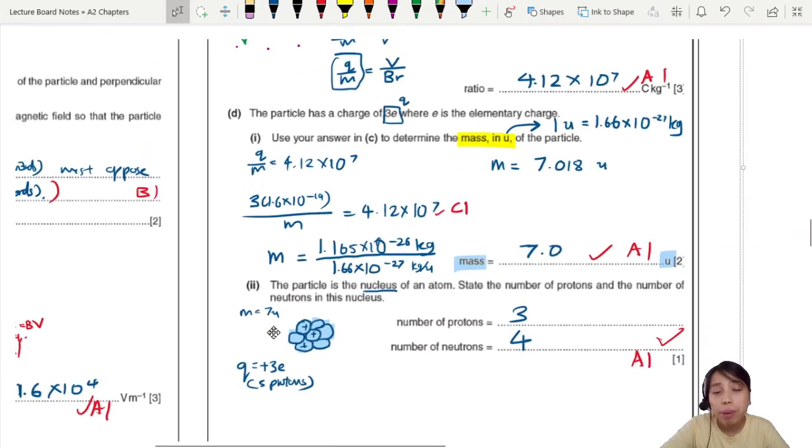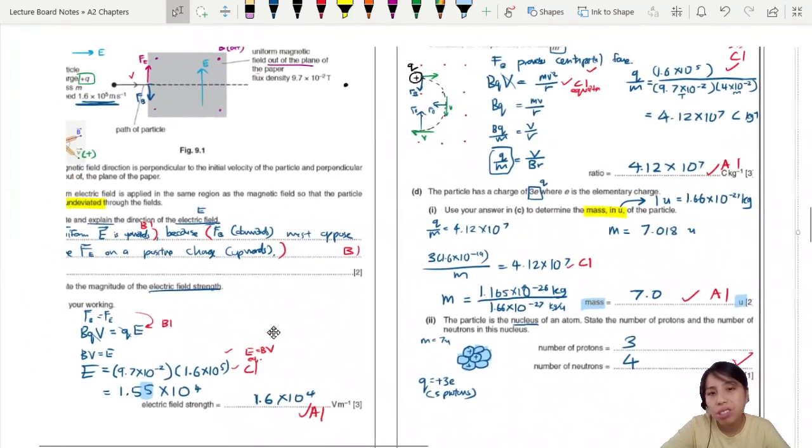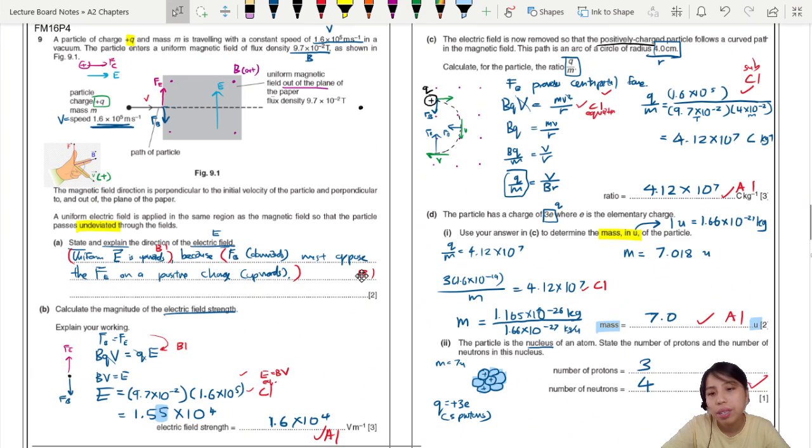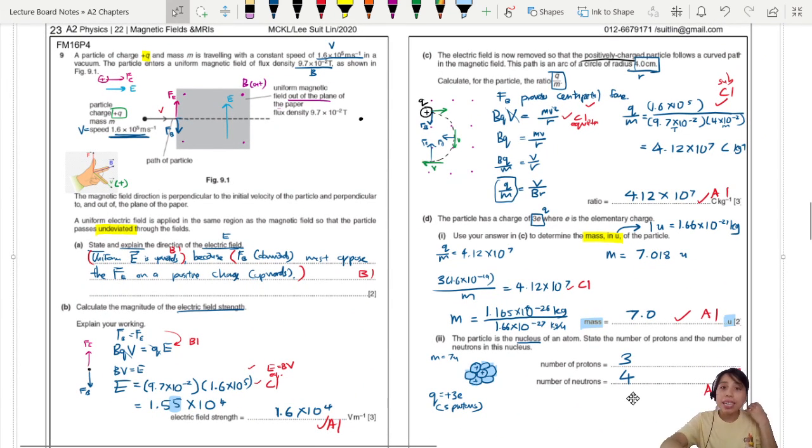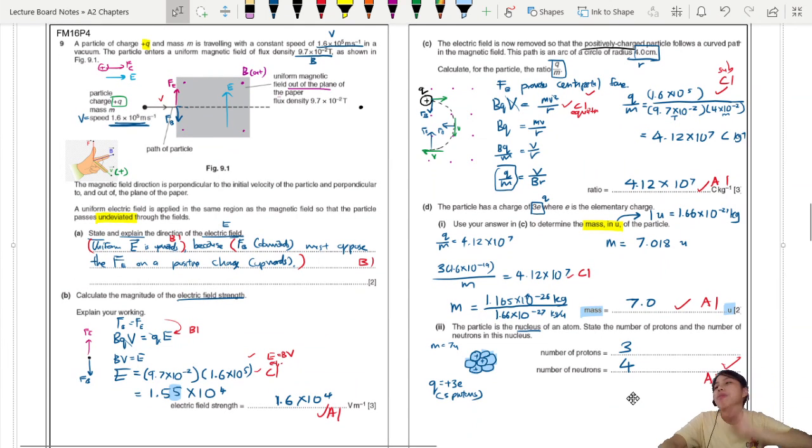From there you can know the protons and neutrons. So what element is this? Go and figure it out, check your periodic table. If you don't take chemistry, go check out the periodic table and see what element has 3 protons. This is how people study particles. You just send some particles flying into a field, and then you can calculate the proton and neutron number, and you can identify the particle. How cool is that? That's all for this example question. See you in the next one.